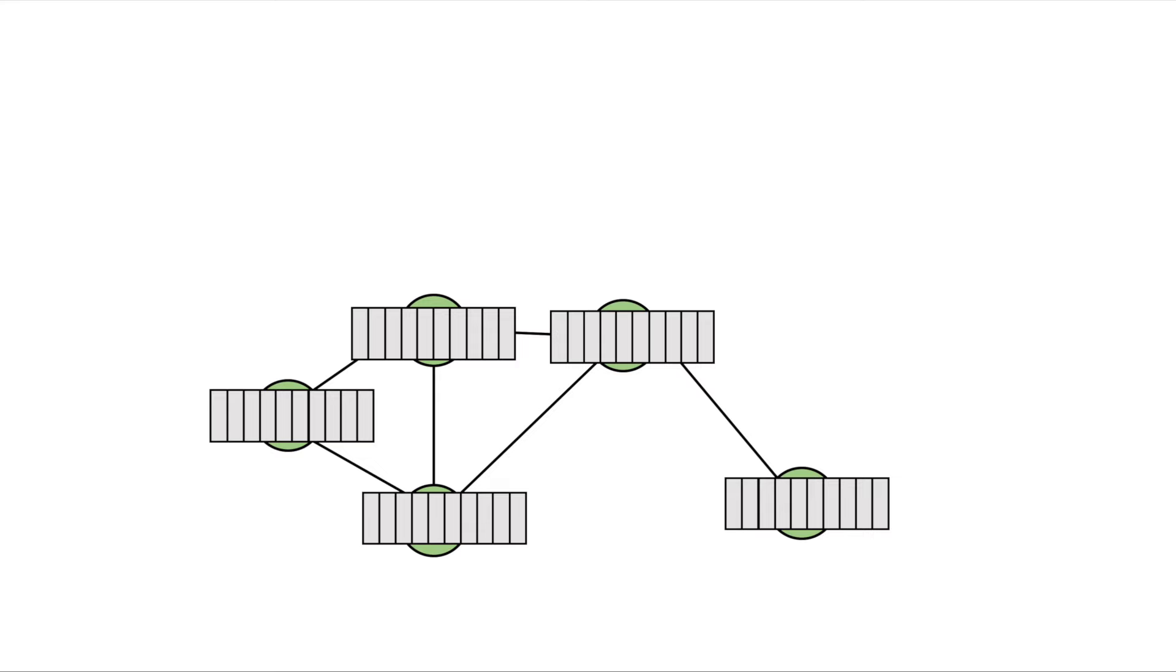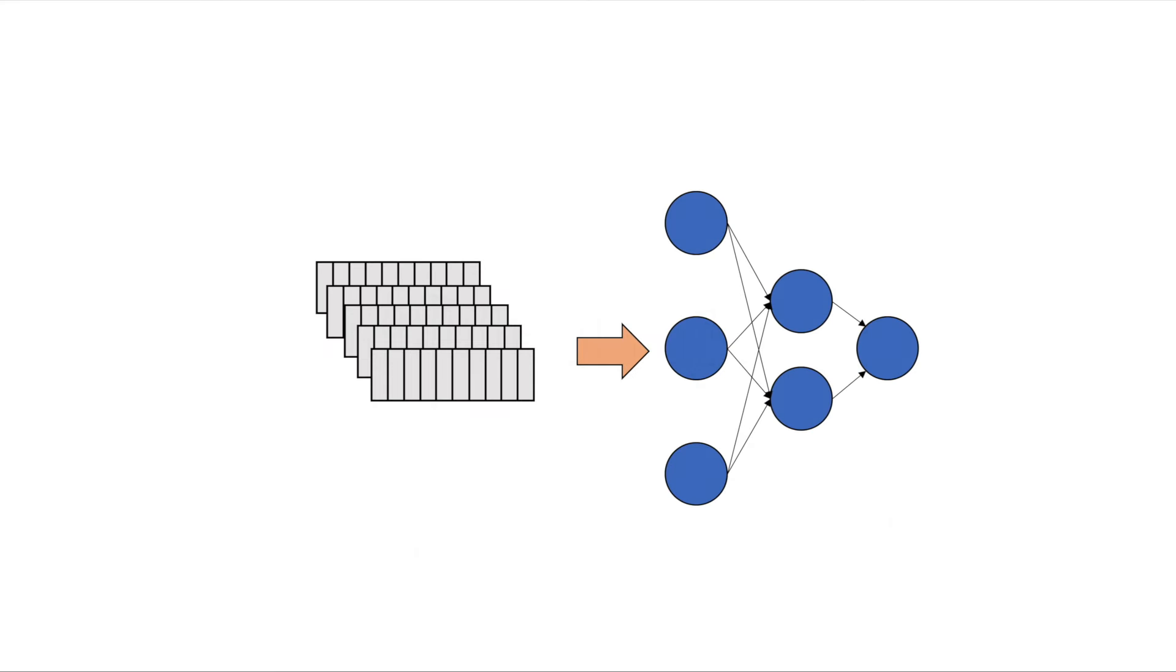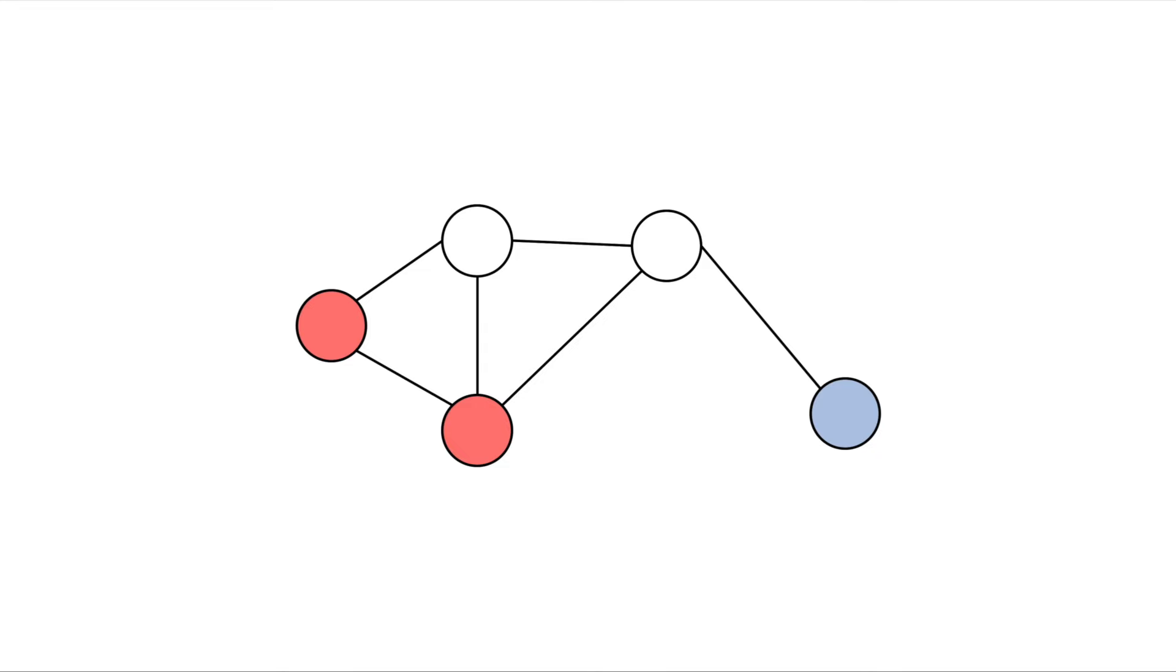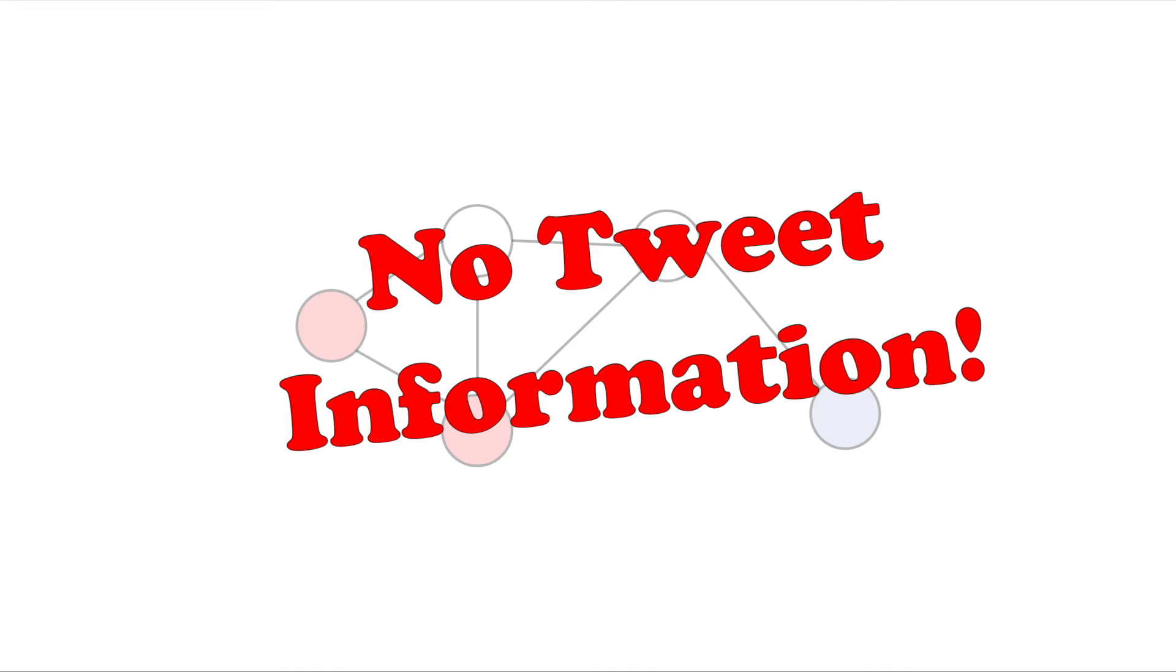If you just wanted to classify each piece of content individually, you could just pass these vectors into a logistic regression model, or whatever classifier you wanted to use, but this would not take advantage of the IP or account ID information. Alternatively, you could use label propagation on the graph structure, but this wouldn't take advantage of the content of the tweet.